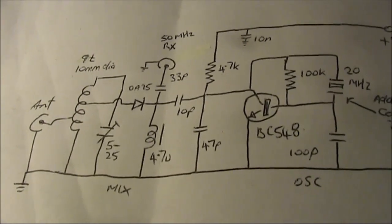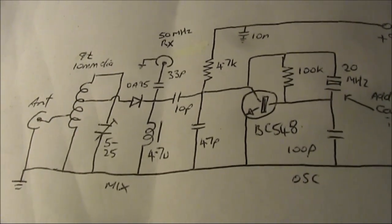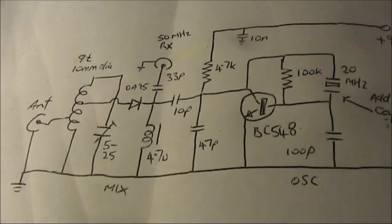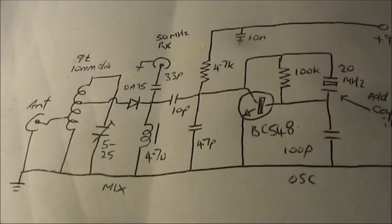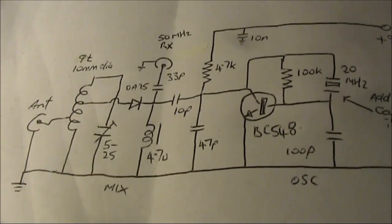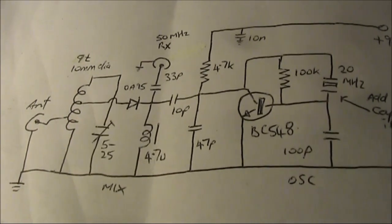Then have a look at one of my earlier videos, where I made a 2 meter converter that stepped signals down to the VHF aircraft band, and I could hear 2 meter repeaters on an air band receiver.